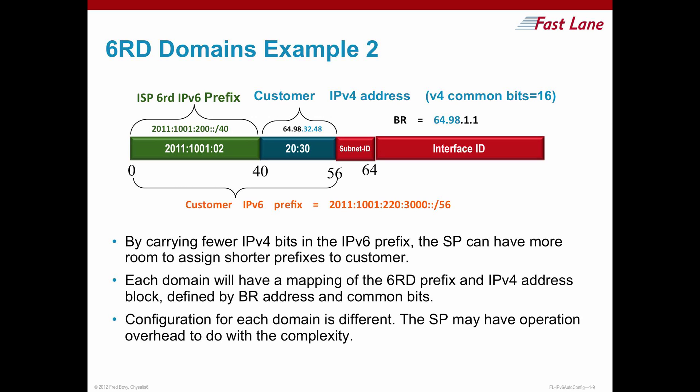Here is a 6RD example. The 2002 prefix has been replaced. You may not need all 32 bits of your IPv4 address — if addresses start with the same prefix, for instance 64.98, the last 16 bits may be sufficient to identify the CPE. You still have subnetting information available, so you can configure multiple subnets within your home network, followed by the interface ID.